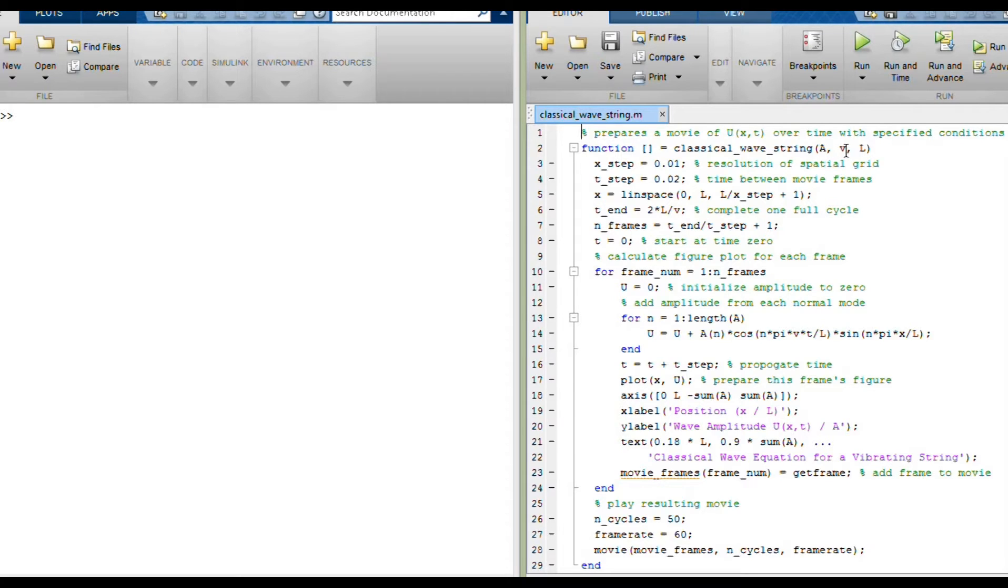You give it some input velocity, the v in the original second order partial differential equation, and an l for the length that the total string is in terms of x. Then I set up some things here to calculate different frames as the wave equation propagates forward through time, and those all get put together into a movie and then get animated at the end.